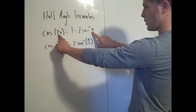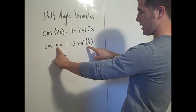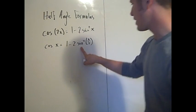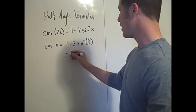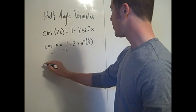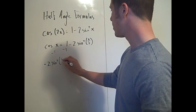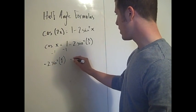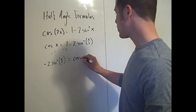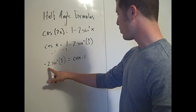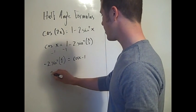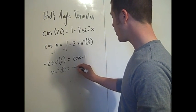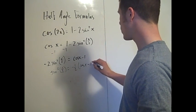Since the angle 2x is twice as big as x, equivalently x is twice as big as x/2, so these two statements are the same. To isolate sine x/2, subtract 1 from both sides to get negative 2 sine squared of x/2 equals cosine x minus 1. Then multiply both sides by negative one-half, giving sine squared of x/2 equals negative one-half times (cosine x minus 1).